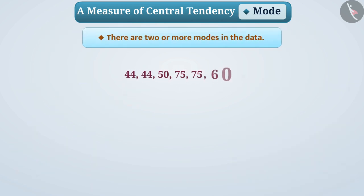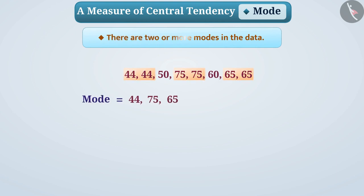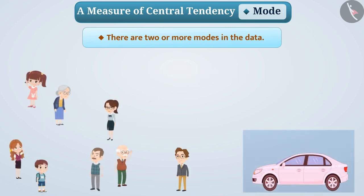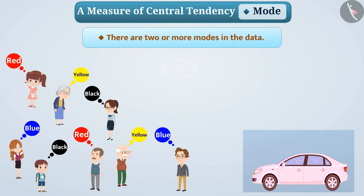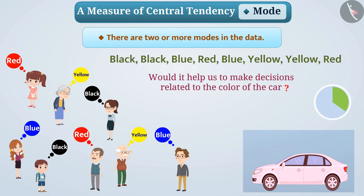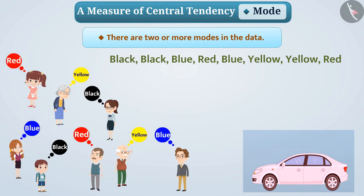There are some collections of data in which all observations are repeated the same way, or there are 2 or more modes in the data. In such a situation, the mode is not a useful measurement. For example, if the colors of the car were selected by family members such that each color is repeated twice, choosing one color will not be easy, and mode would not help in making a decision.